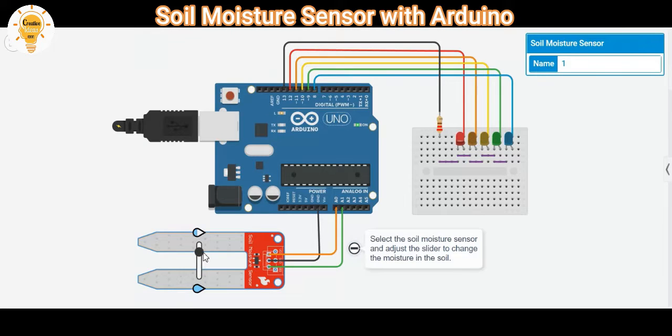We will read this data and display the output status with an LED for digital output, and we will use the serial monitor or an LED with PWM for analog output. So without further ado, let's get right into it.